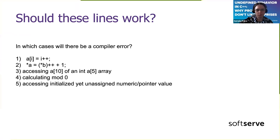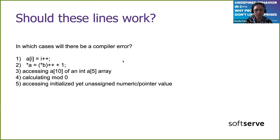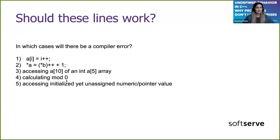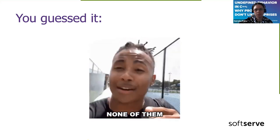Here's a question: which of these cases will result in a compiler error, assuming a pure GCC run with no additional flags like -Werror? The answer is: in none of these cases. Modulo by zero generates only a warning, even though it's one of the most common ways to invoke undefined behavior in C++, and it's absolutely pointless.